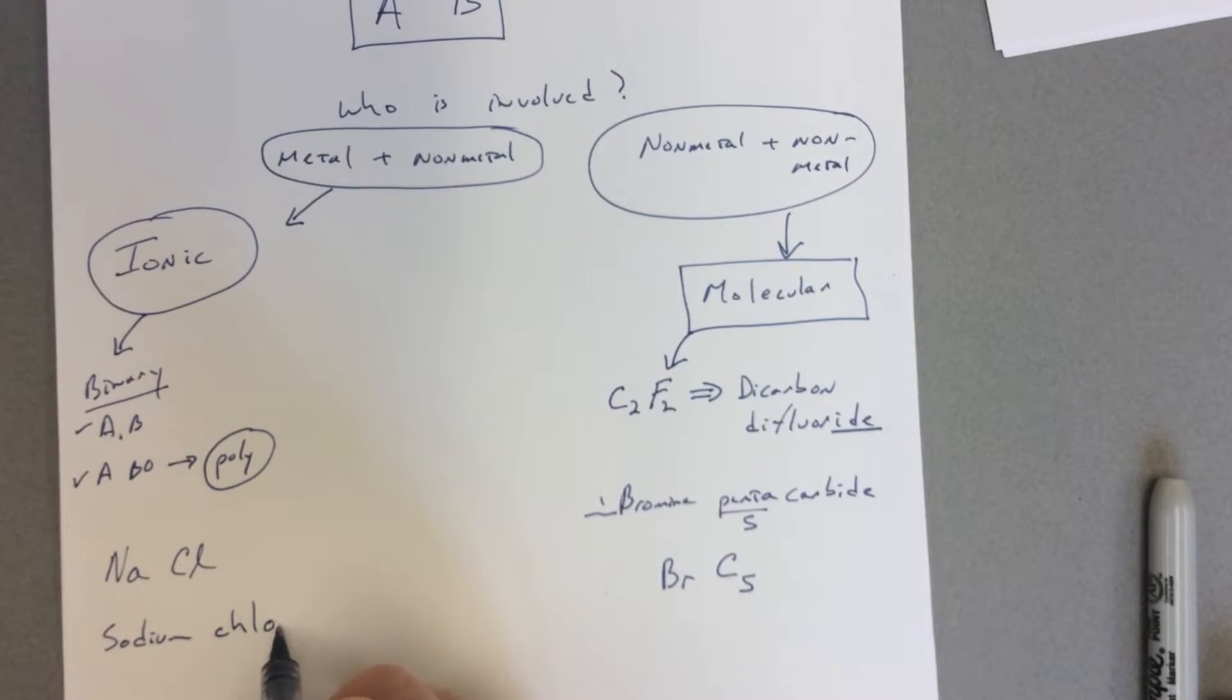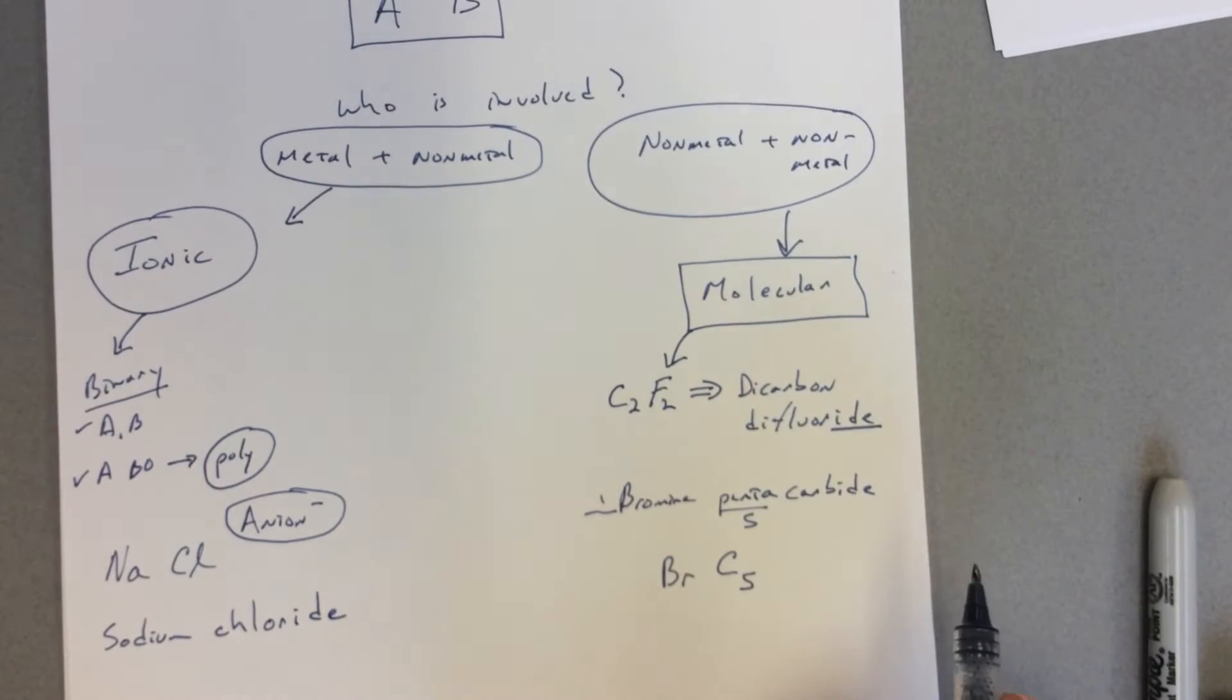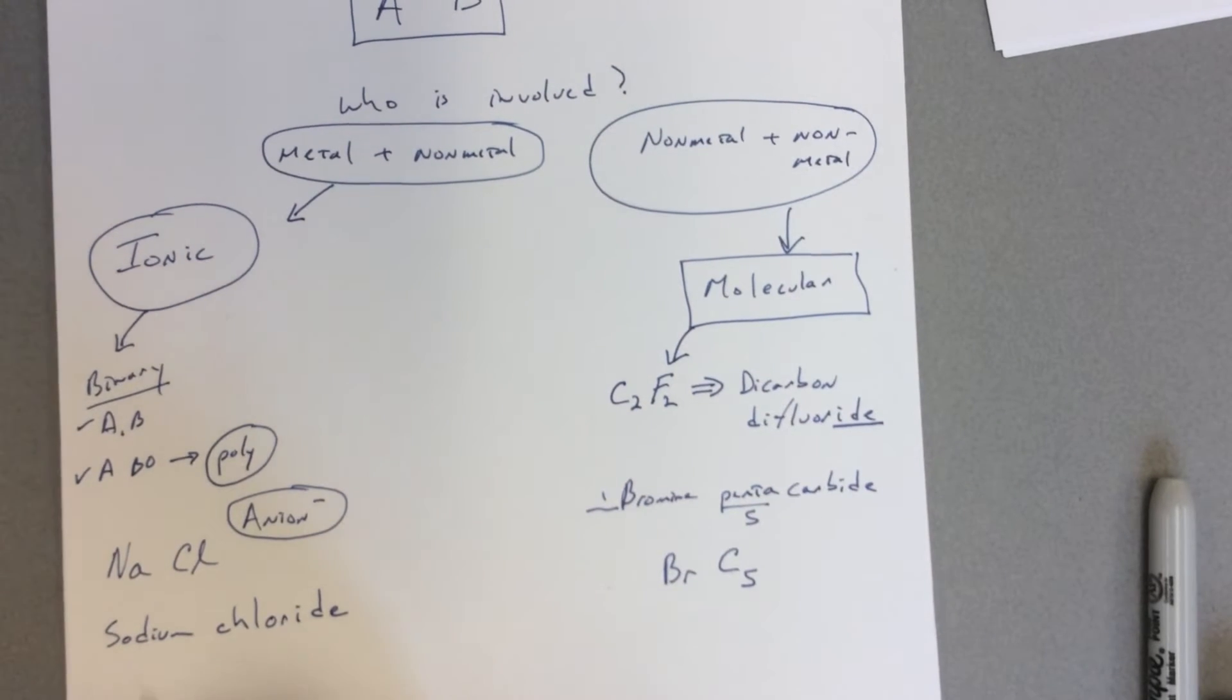And again we make the ending of the anion—the anion, remember, the negative ion—ends in -ide, chloride. Okay, if for instance we said what is the name for, say sodium, what's the formula for sodium?